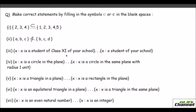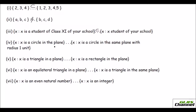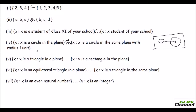Third: {X : X is a student of class 11 of your school} versus {X : X is a student of your school} — yes, it is a subset. The right-hand set contains all students of the school, and 11th-grade students are included in that. Fourth: {X : X is a circle in the plane} versus {X : X is a circle in the same plane with radius 1 unit} — no, not a subset. A circle in the plane need not have radius 1, so the left-hand set is not fully contained in the right-hand set.